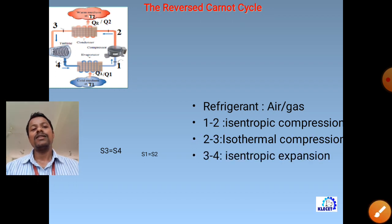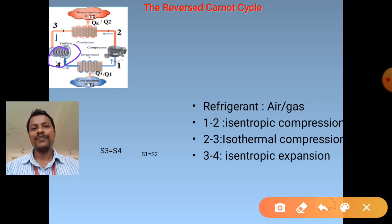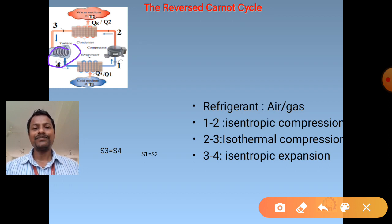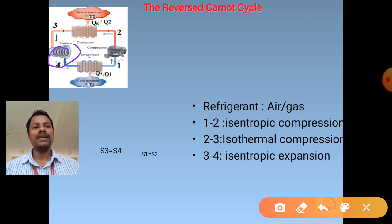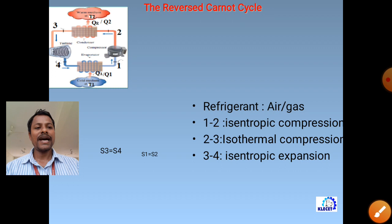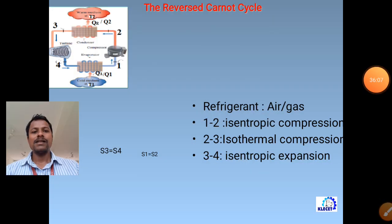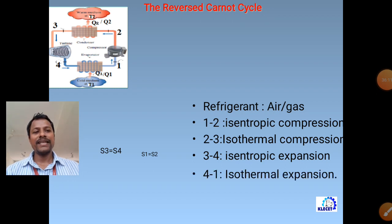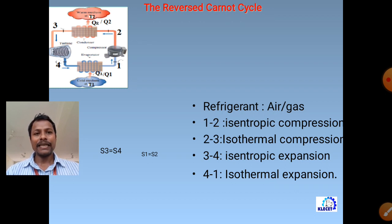Now let us discuss the air cycle refrigeration portion of our syllabus. We will first understand the reversed Carnot cycle, then the reversed Brayton cycle, before moving to vapor compression refrigeration - because the disadvantages of air cycle refrigeration motivate the development of vapor compression refrigeration. First, let us understand the reversed Carnot cycle for refrigeration.